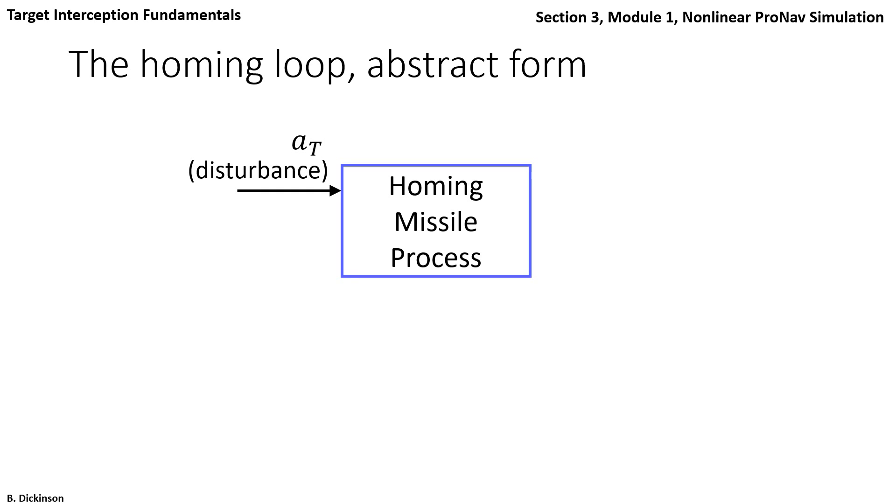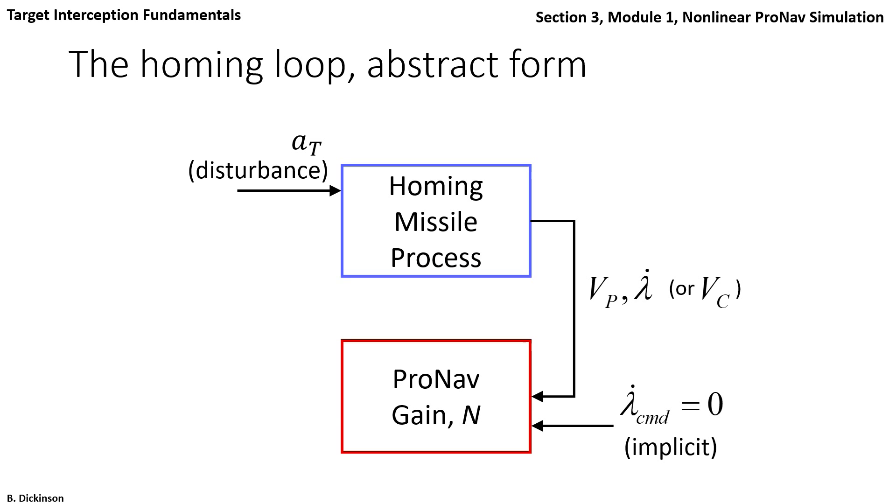An acceleration from the target is an input that's a disturbance. There's a pursuer velocity, a line of sight rate, also a closing velocity if we're using true PRONAV. That goes into the PRONAV law. And implicit in that PRONAV law, by the way, is that line of sight rate is zero. The PRONAV law attempts to establish zero line of sight rate. The output of the PRONAV law is an acceleration command. And if everything goes correctly, we achieve the desired missed distance, which should be very close to zero. So that's a terminal objective, a final time objective.